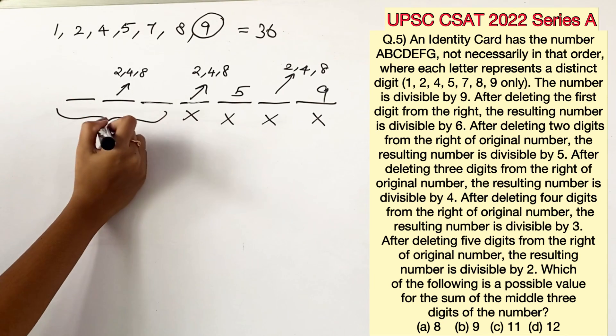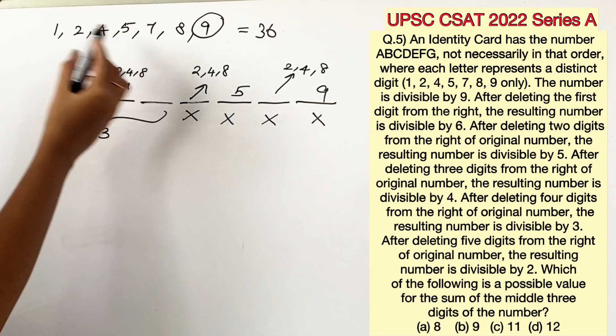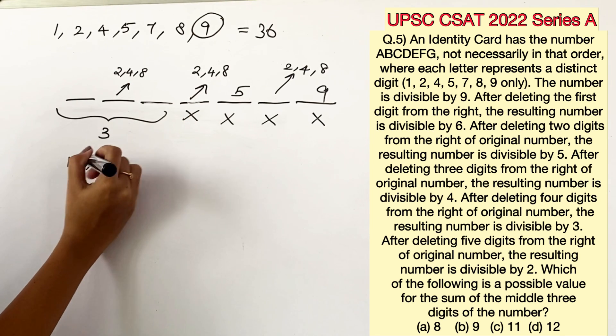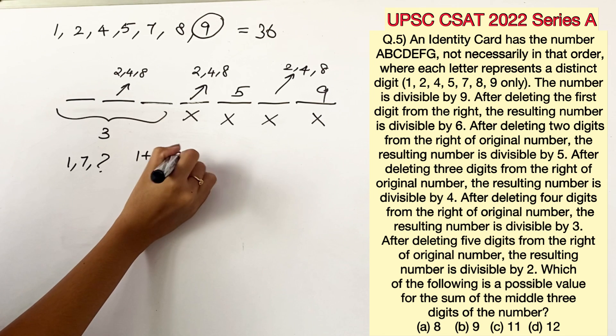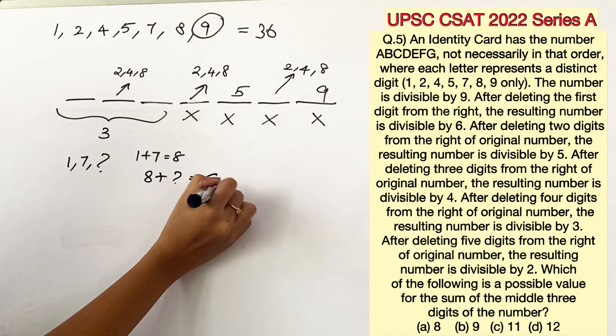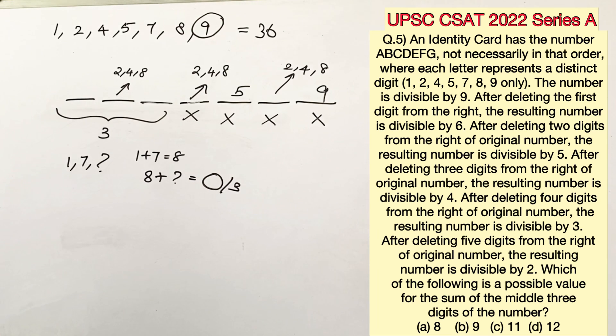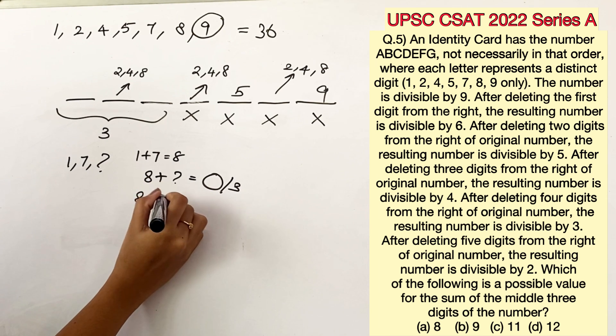Now moving back to the previous statement. If you watch closely we are left with 2 blank spaces which can be filled only by 1 and 7. We have now decoded that 1 and 7 are already in this 3 digit number. And the addition of the 3 digit number should give us a number which is divisible by 3. So 1 plus 7 will give us 8. What number should you add with 8 to give you a number divisible by 3?